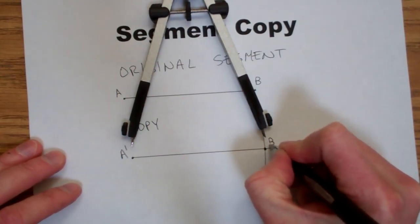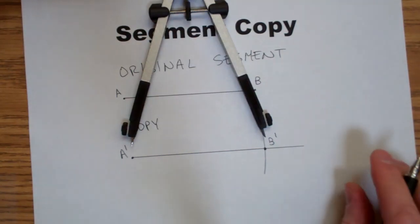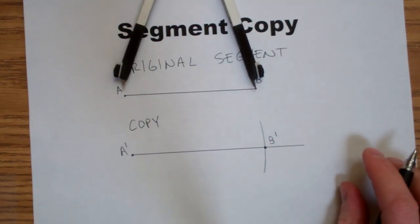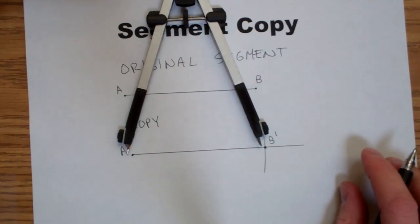And at that intersection, we'll label it B prime. As you can see, the distance between points A and B is exactly the same as the distance between A prime and B prime.